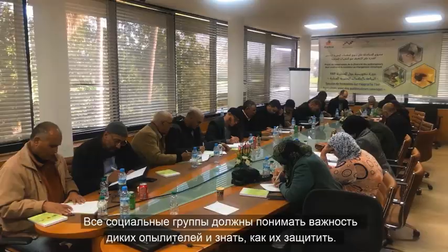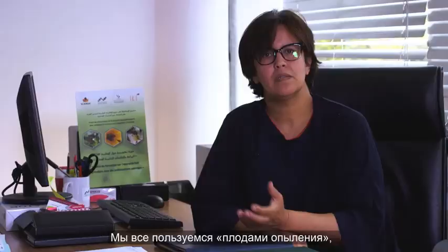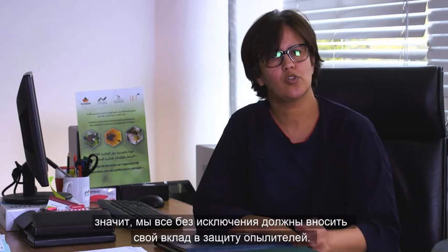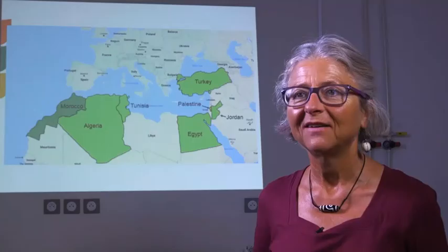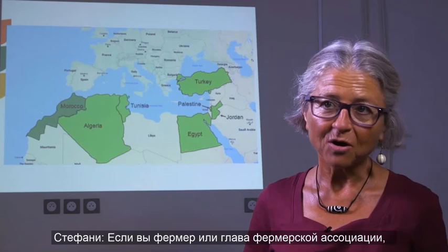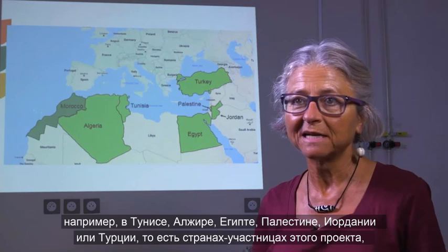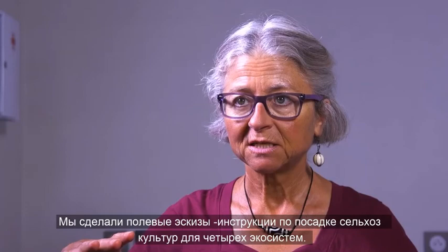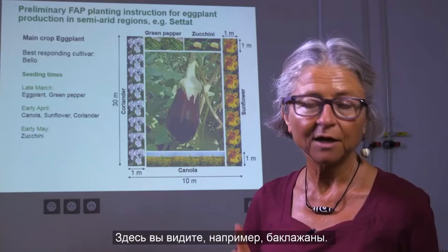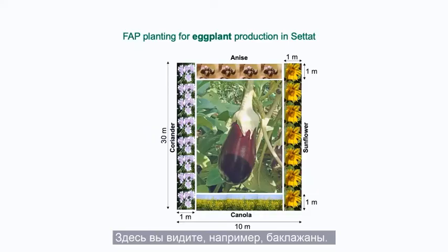We all benefit from pollination services — hence we all without exception should contribute to the protection of pollinators. If you are a farmer or head of a farmer association in Algeria, Tunisia, Egypt, Jordan, Palestine, or Turkey — the participating countries of this project — and you want to use FAB for your field, then you can use our field sketches. We developed planting instructions as field sketches for different ecosystems. Here, for instance, you see eggplants with habitat enhancement plants shown with photos, so even illiterate farmers can benefit.